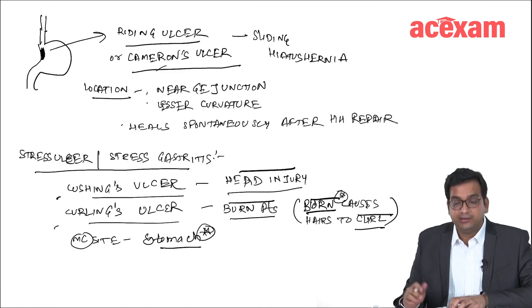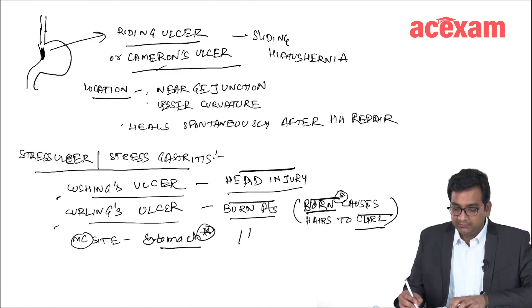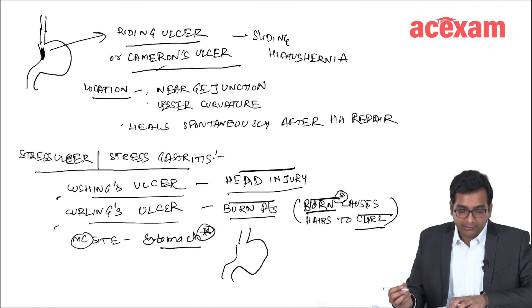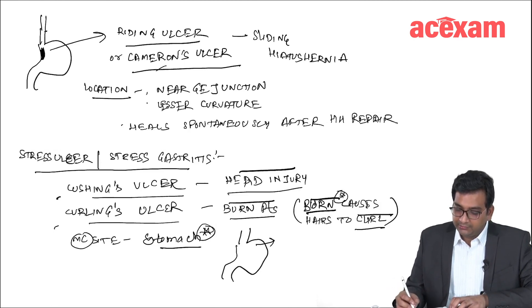What is the most common site of stress ulcers? It is the stomach. Where in the stomach? The maximum acid production occurs from the fundus, so the most common site in the stomach is the fundus.